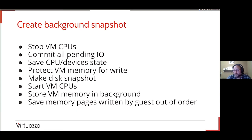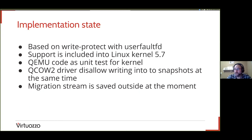This would be a miracle — yes, this would be a miracle. And this can definitely be implemented right now. The notification engine — userfaultfd — is already committed into Linux kernel 5.7. And fortunately, the QEMU code used for live migration was used as a unit test for that code. Thus, the feature is really working. We just need to get this code finally tuned and ready to be merged into mainstream QEMU.